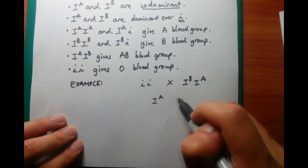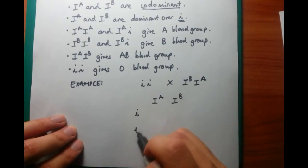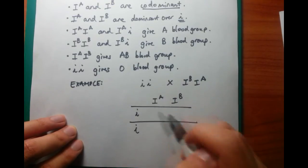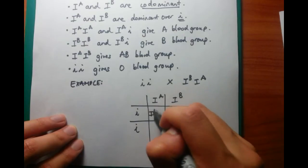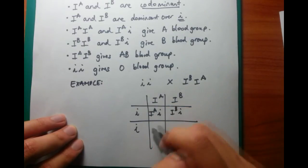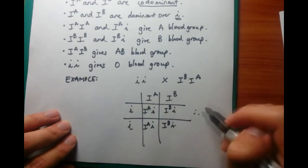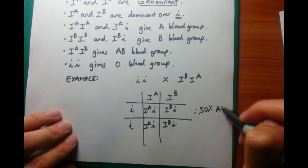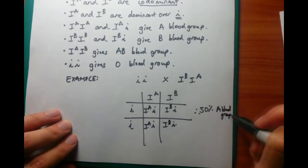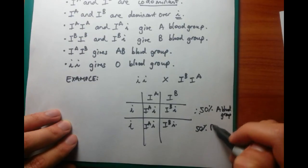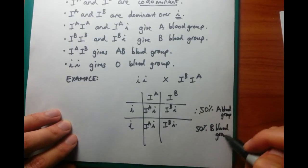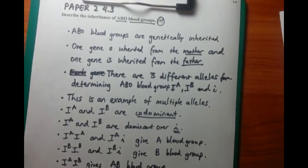Now, the final mark that I wanted to talk about was the example. So I'm a big proponent of every time that you have an opportunity to explain a particular concept, you want to give an example as well. In this case, I've given a cross, ii, crossing with I^B, I^A. And at the very bottom, you've got the resulting phenotype ratios. And that's how I did it.